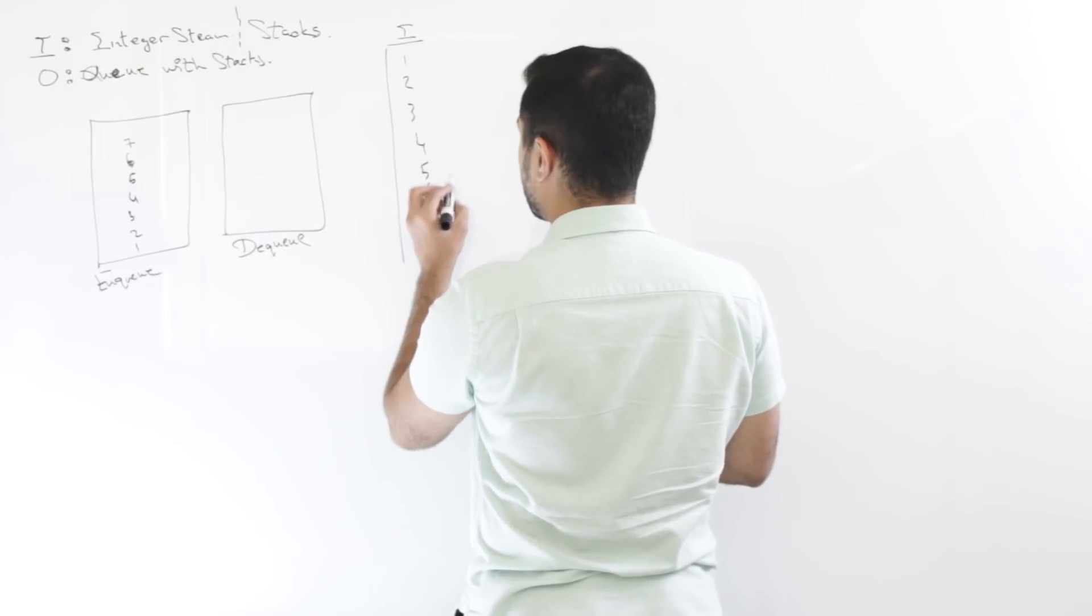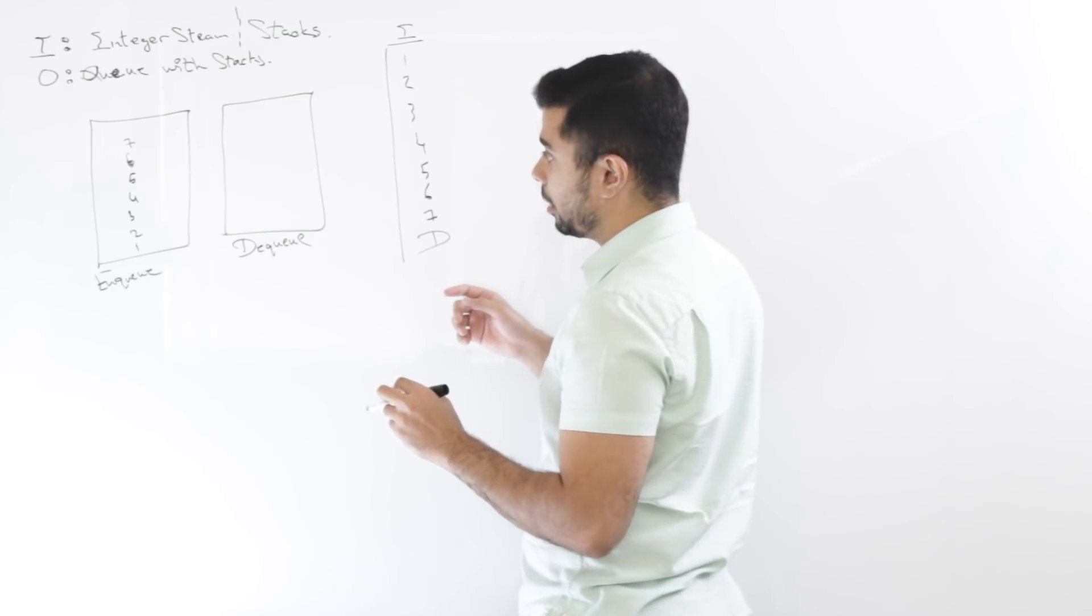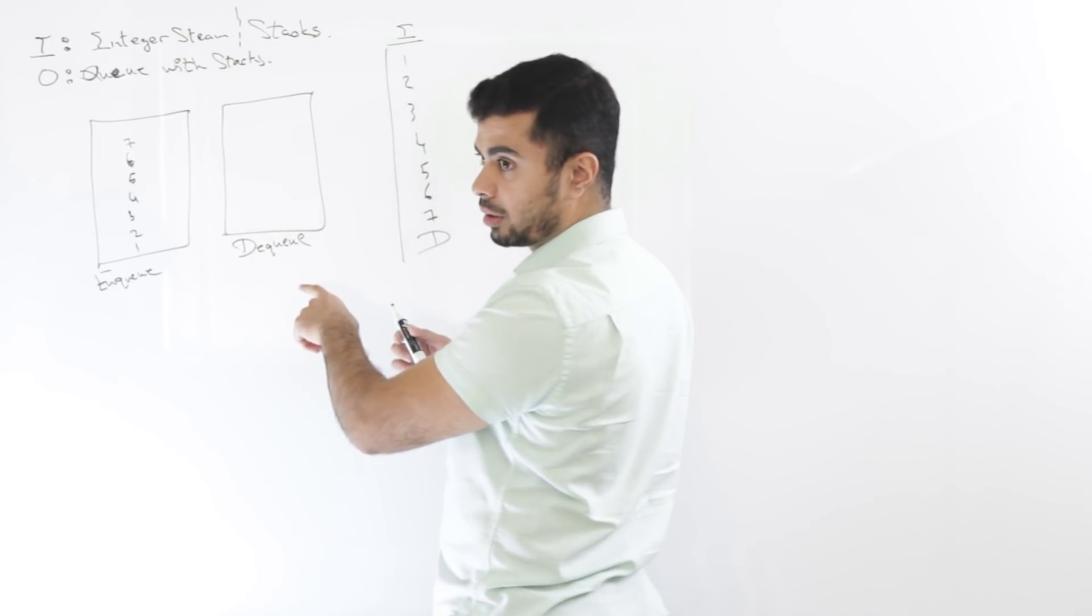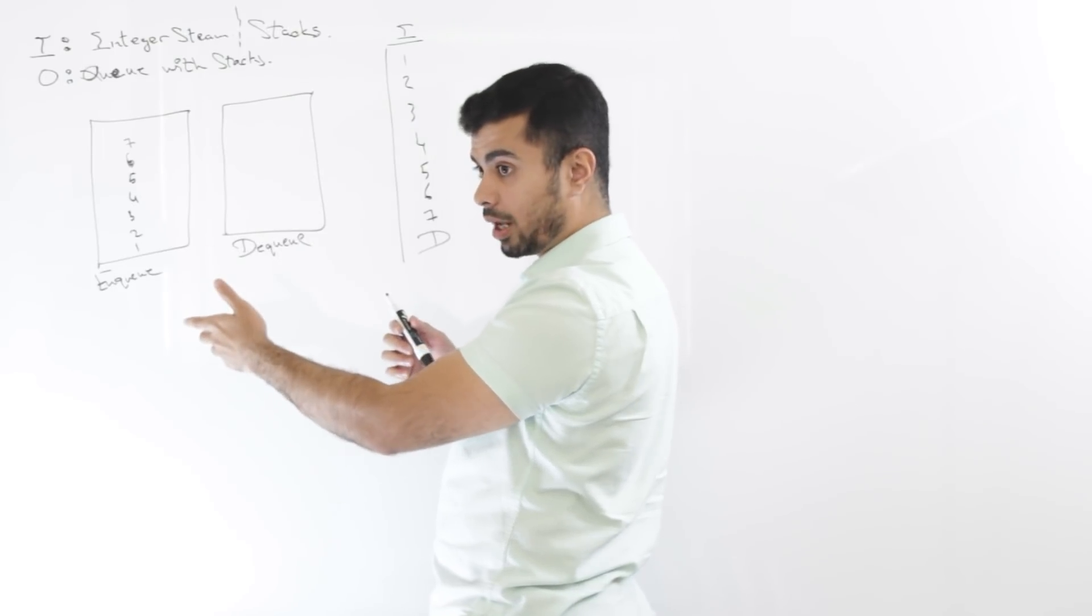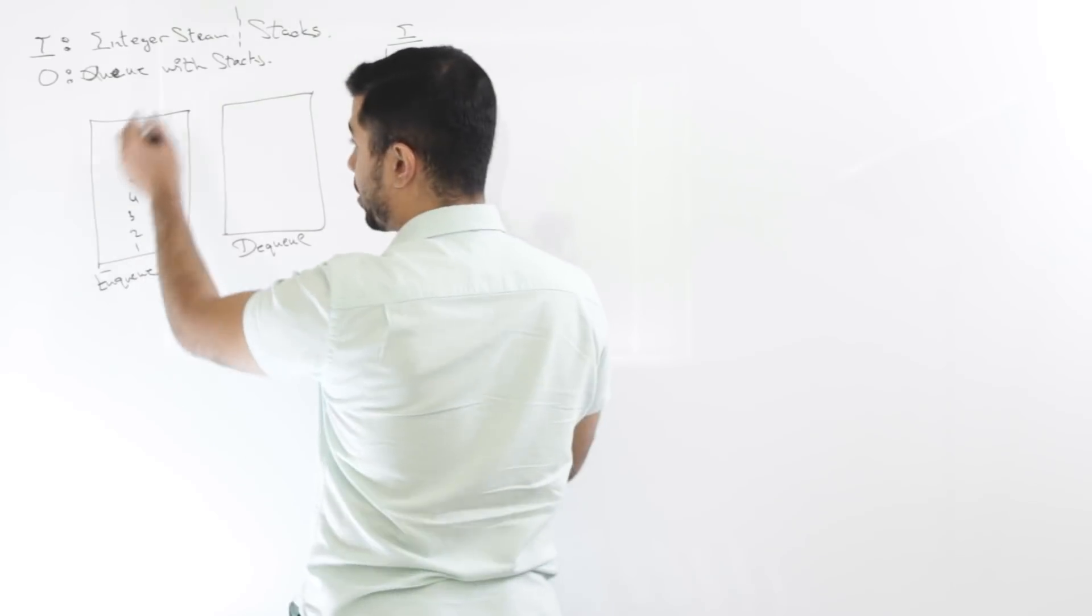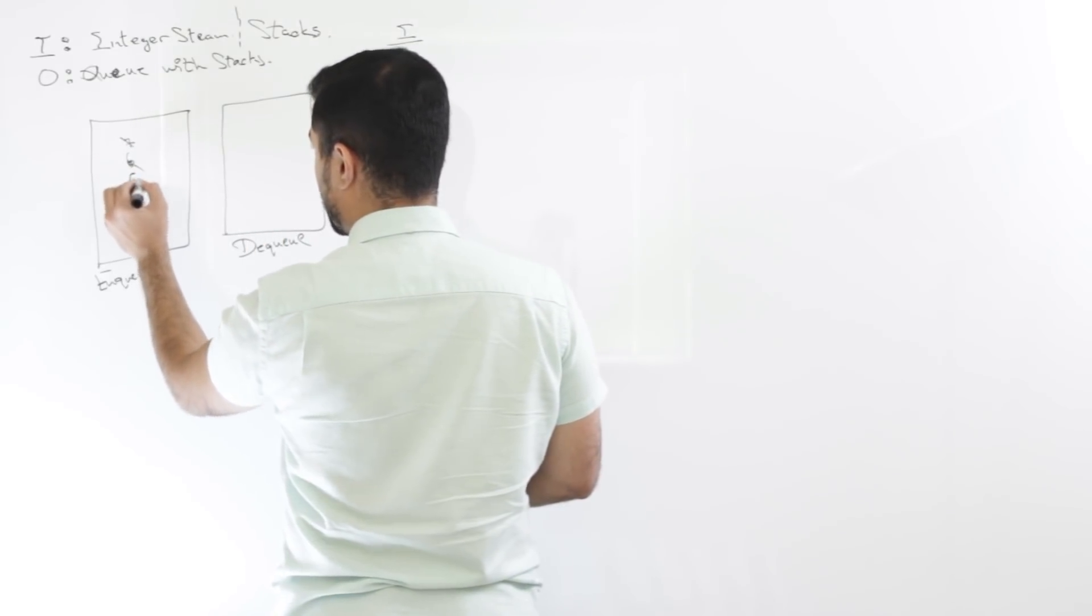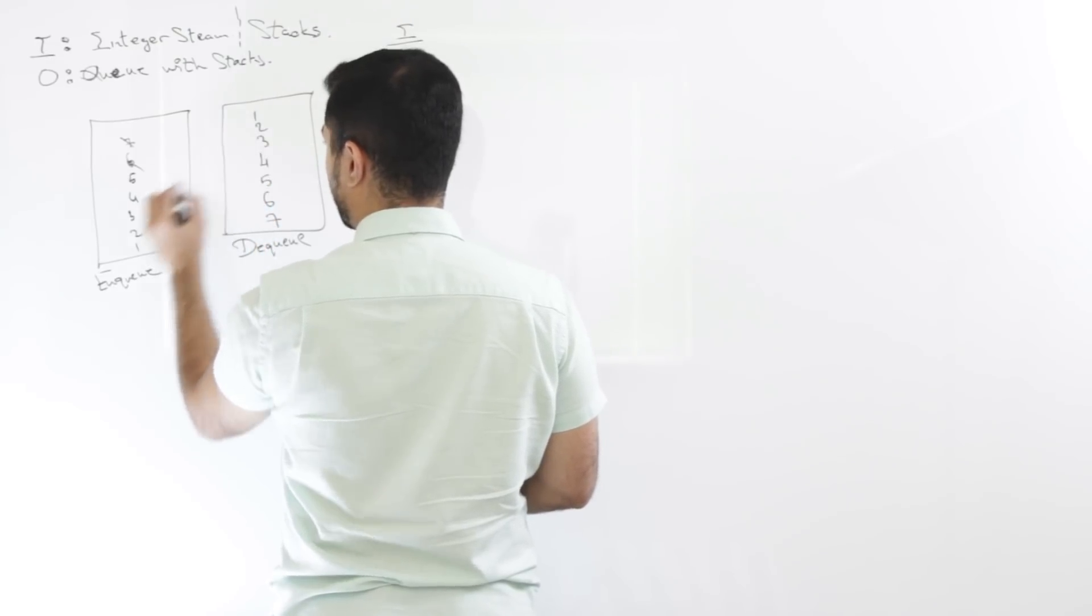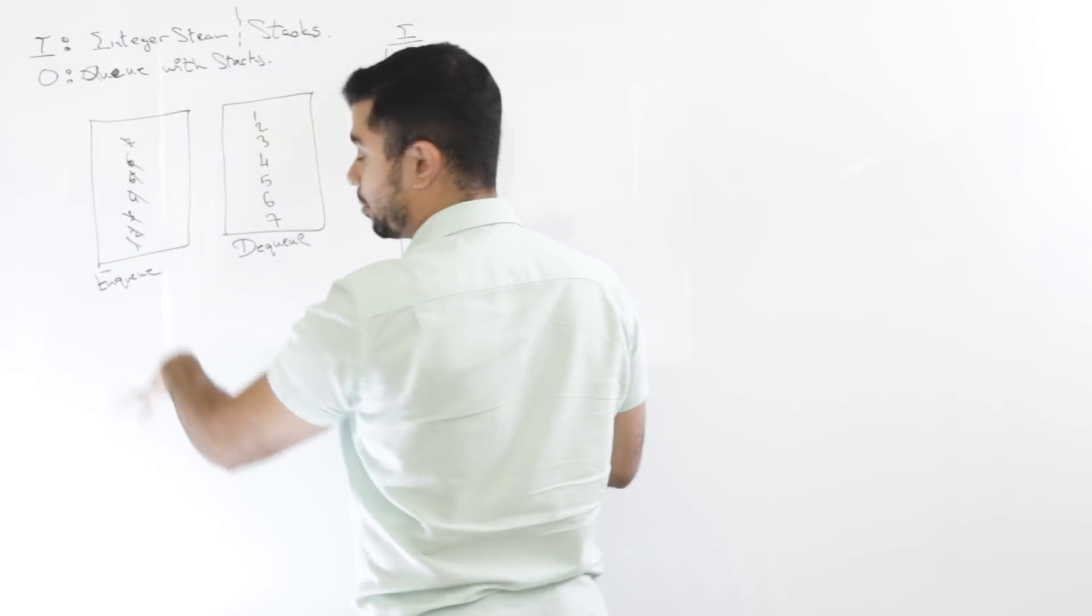Now, the moment there is a dequeue command, then I will need to reverse this entire thing. So that's when the dequeue stack comes in. So basically I will see, hey, is there anything in the dequeue stack? If there is, then you output that. That would be the result of the D. But if there isn't, then you pop everything out from here and you push it into dequeue. So basically as you pop these out, you'll have 7, 6, 5, 4, 3, 2, and 1. So you have to pop all of them out. So for each dequeue command, basically you need to empty the enqueue stack.